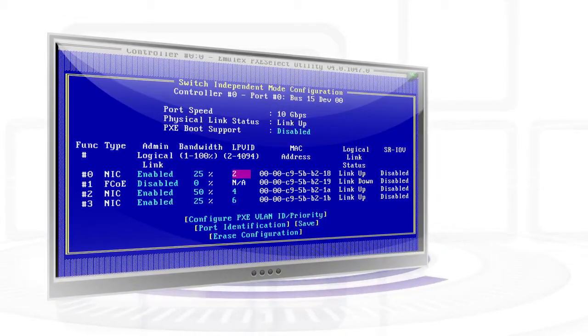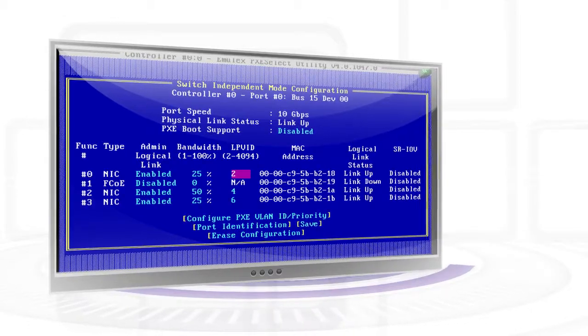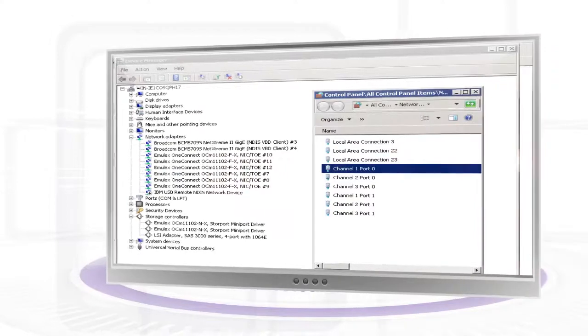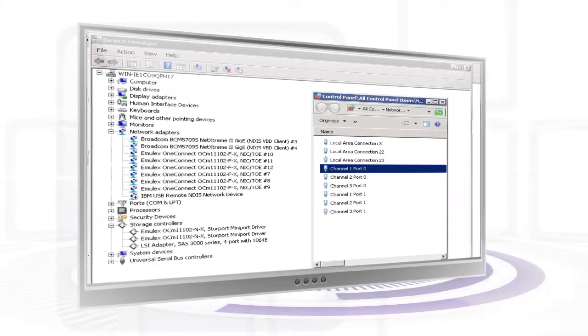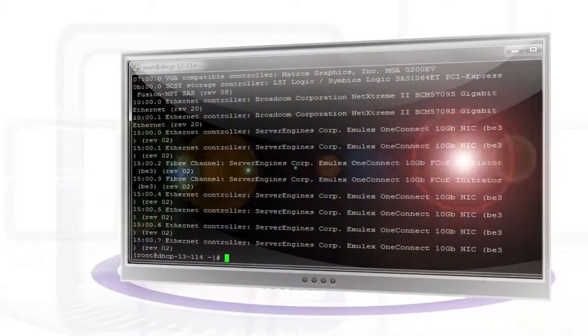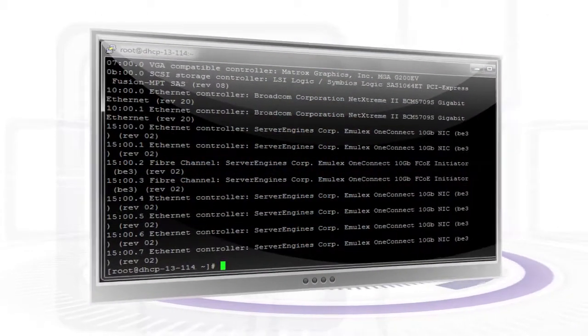The FCOE channel can also be configured as network or iSCSI channel. Once enabled, as can be seen, the adapter appears as multiple network adapters in the Windows operating system and as multiple interfaces in Linux.